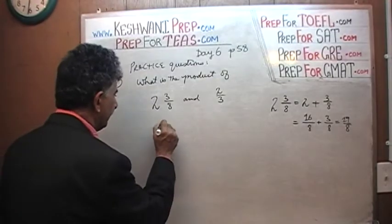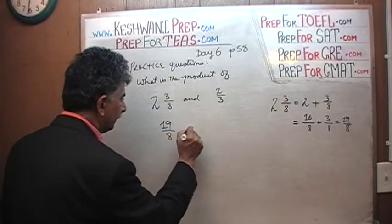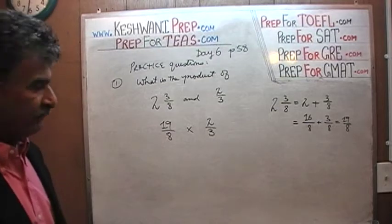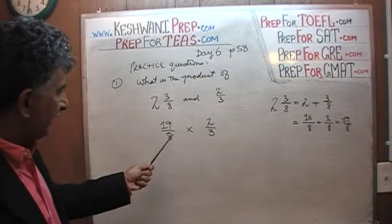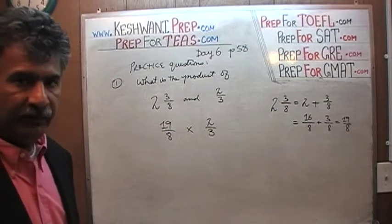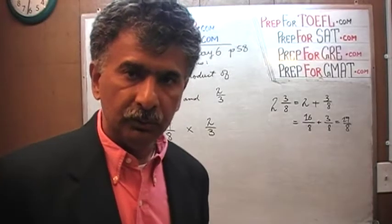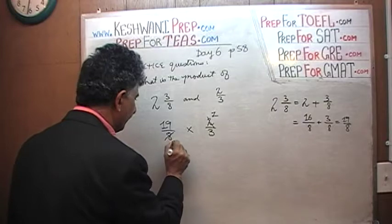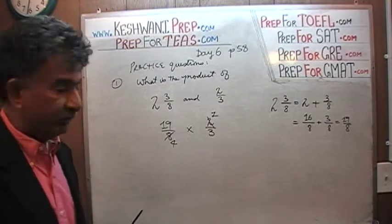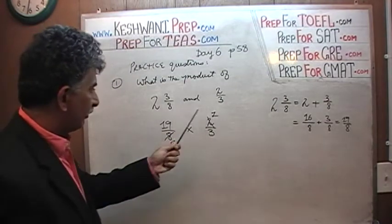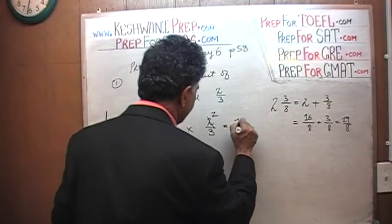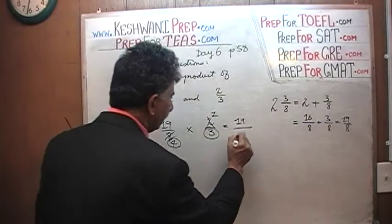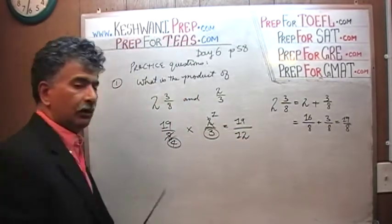So we have nineteen-eighths times two-thirds. Is there anything we can reduce? We see an eight and a two — let's divide the top and bottom by two. The two becomes one and the eight becomes four. That's all we can simplify. We get nineteen times one, which is just nineteen on top.